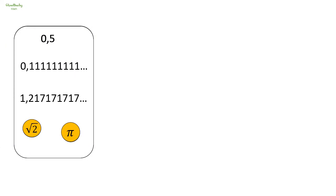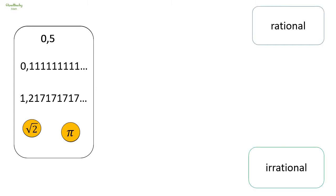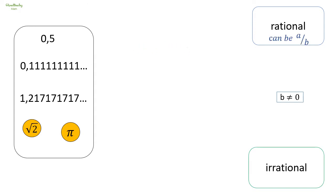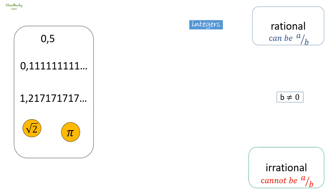We are going to examine the numbers on your screen to help you understand how to identify any number as rational or irrational. Any number that can be written as a simple fraction a over b, in which both a and b are integers, is a rational number. An irrational number is a number that cannot be expressed as a simple fraction — we cannot write it as a over b where a and b are both integers. An integer is a whole number that can either be negative or positive.